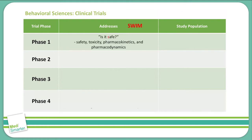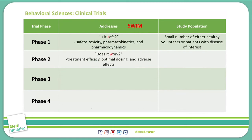Phase one addresses 'Is it safe?' — the S in SWIM. It studies whether the drug is safe, whether it is toxic, and what the pharmacokinetics and pharmacodynamics are. The population in phase one clinical trials includes a small number of patients — typically healthy patients, but they can be patients with the disease of interest.